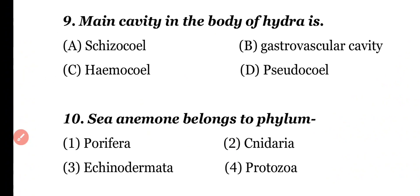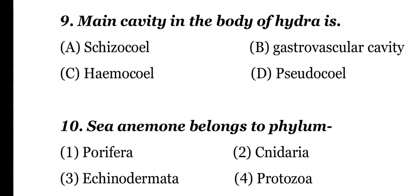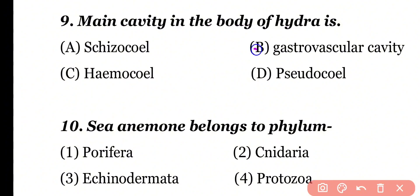Question number 9: The main cavity in the body of Hydra is: schizocoel, gastrovascular cavity, haemocoel, or pseudocoel. Correct answer is option B. The main cavity of Hydra is the gastrovascular cavity, also known as coelenteron.